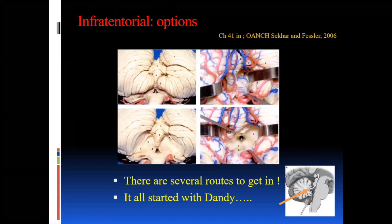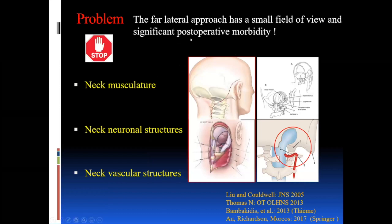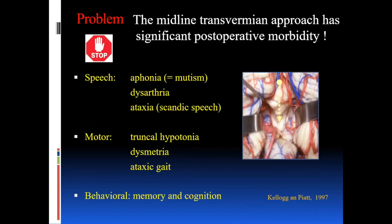For your infratentorial axis there are several routes to get in, all starting with Dandy. There are two classic approaches: the transvermian approach, coming from medial to lateral splitting the inferior half of the vermis to gain access to the ventricle, or the far-lateral transcondylar approach coming lateral to medially. The far-lateral works well for lesions in the CPA angle or extraaxial disease such as aneurysms and sometimes meningiomas. For intraventricular lesions I've largely abandoned this — the far-lateral approach has a very small field of view.